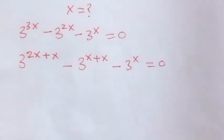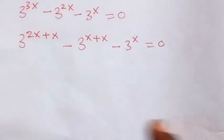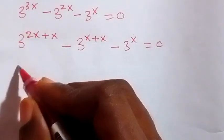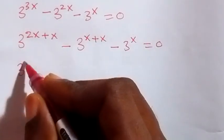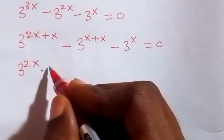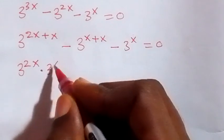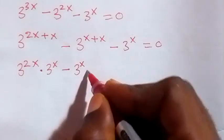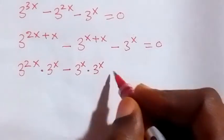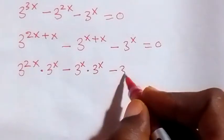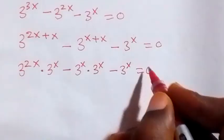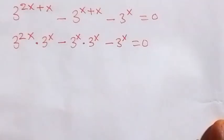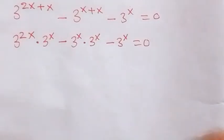We have x common there. When we write this again from the law of indices, this will give us 3 raised to power 2x times 3 raised to power x, then minus 3 raised to power x, then 3 raised to power x here, then minus 3 raised to power x, equals to 0.